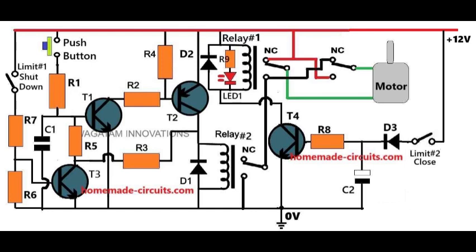limit switch number 1 gets pressed again. This turns on transistor T3, which disrupts the latch circuit formed by T1 and T2. As a result, both transistors and relay number 2 turn off.